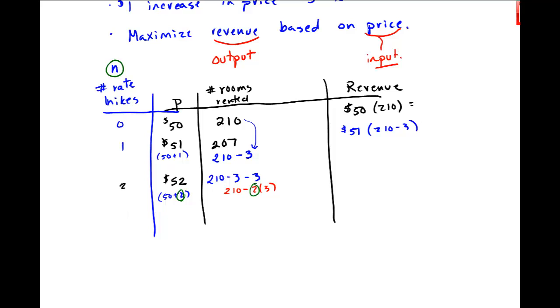So that's the second rate hike. So 3, let's raise the price to $53. Then I have to subtract 3, 3 times. So I get down to, this one was 204. I think this one is 201. And this, based on the pattern, is 210 minus 3 times 3. Now this is my $3 price decrease. And this is how many times I raised the, or this is my 3 room decrease of 3 rooms for this $1 increase in price.